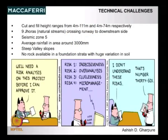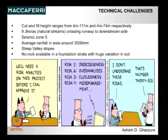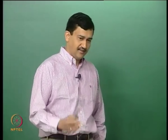If you look at that, the first thing that comes to mind is: do we have risk in this? It is just a joke — we have to do risk analysis first to even think about whether we can build this kind of structure. The risk categories listed include indecisiveness, over analysis, cluelessness, and micromanagement. There was a lot of uncertainty; we did not even know what kind of risk we were getting into by designing this kind of structure. Anyway, we went ahead and took that decision.